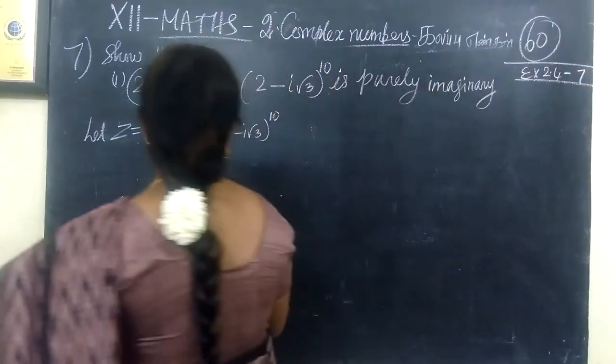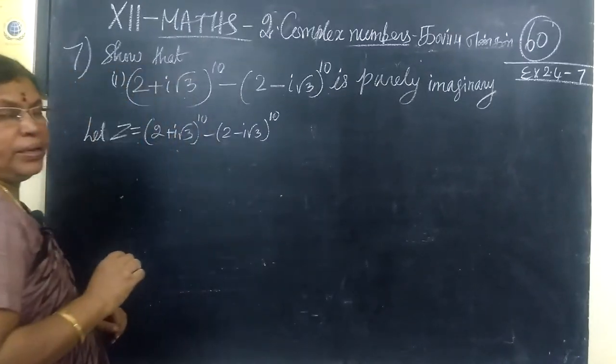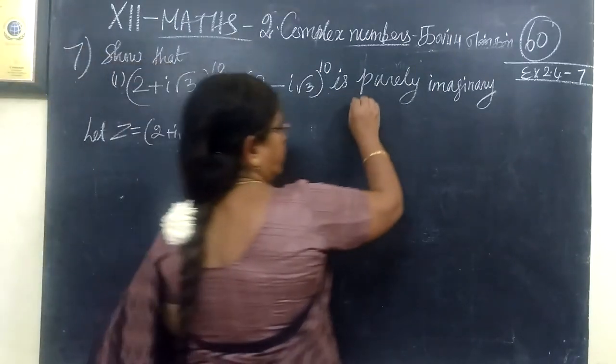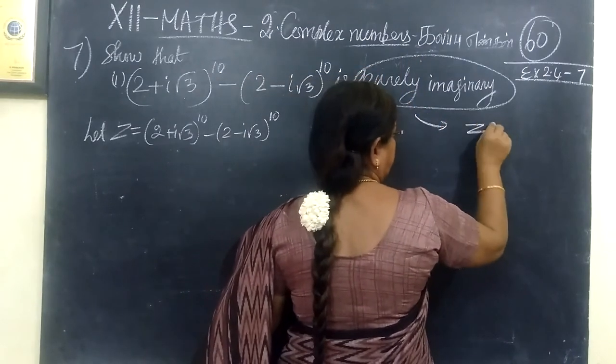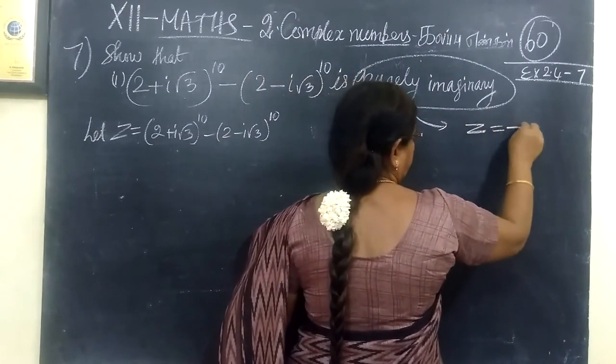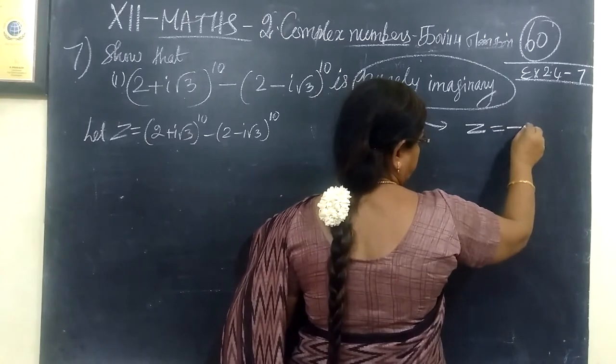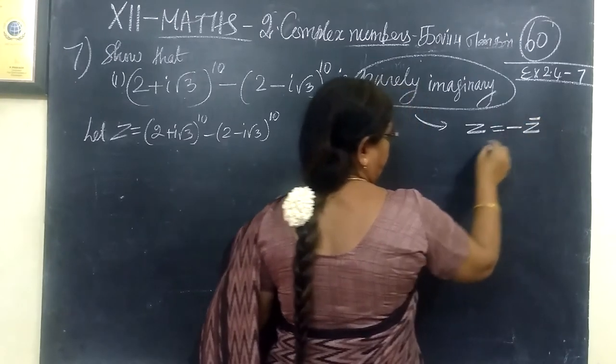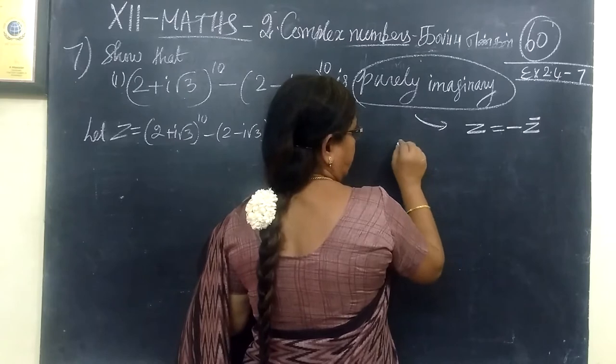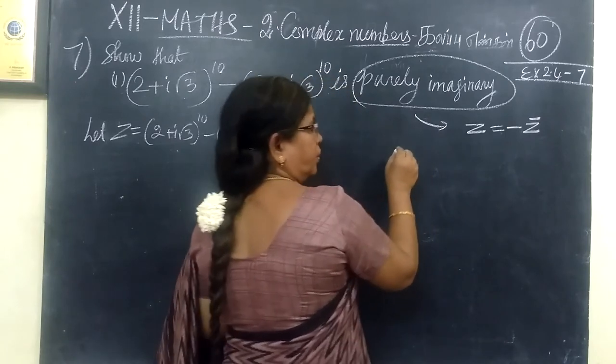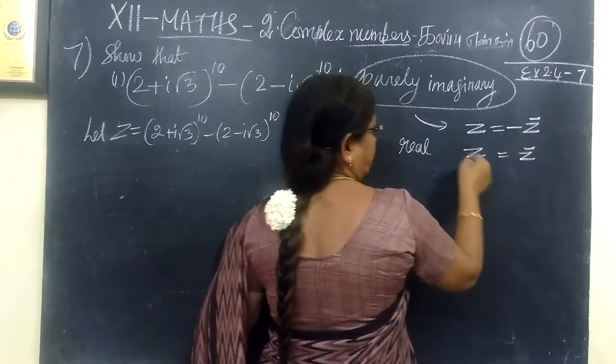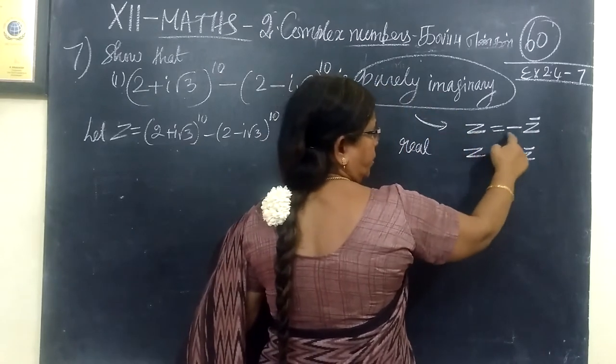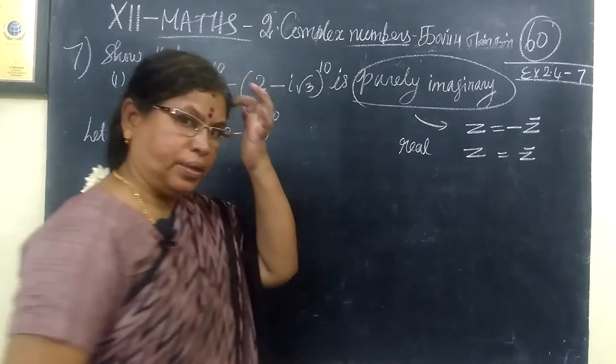So that this first one is purely imaginary. If purely imaginary, we know the condition Z equal to minus Z bar. Here purely imaginary, then real. Real means Z equal to Z bar. Imaginary means, purely imaginary means, Z equal to minus Z bar.